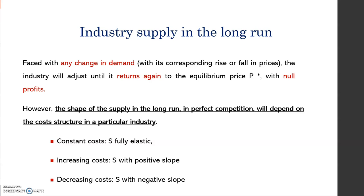The shape of the supply in the long run in perfect competition depends on the cost structure of the industry. In a constant cost industry, supply is fully elastic — a horizontal line. In an increasing cost industry, supply has a positive slope. In a decreasing cost industry with economies of scale, supply has a negative slope.